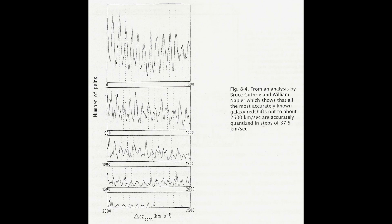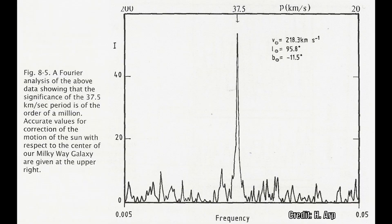They also discovered an even more pronounced periodicity at 37 and a half kilometers per second. A Fourier analysis of this clearly picks out this peak at 37 and a half. They published their results and surprise, surprise, it was buried, ignored and laughed at.